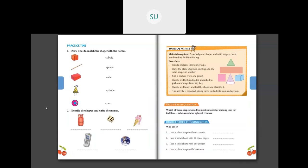Now draw a line to match the shapes with their names. A dice is an example for a cube — C-U-B-E. A flute is an example for a cylinder. A box is shaped like a cuboid — C-U-B-O-I-D. A birthday cap is an example for a cone — C-O-N-E. And a ball is an example for a sphere — S-P-H-E-R-E.